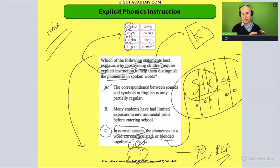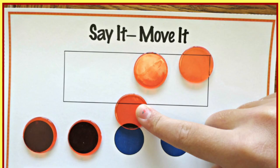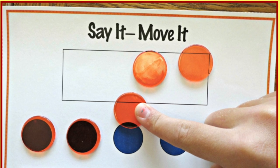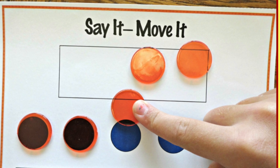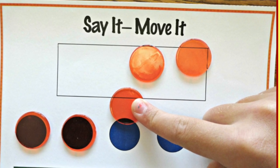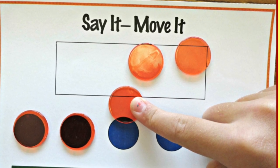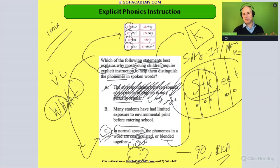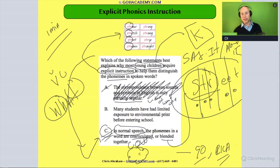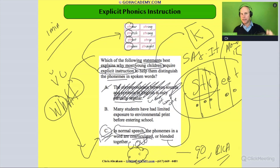There are some sounds in the English language that are co-articulated or blended together, and it might be tricky for a beginning reader. When we do explicit instruction involving sounds — like 'say it and move it' — that type of explicit phonics instruction is going to help with letter-sound correspondence, because in everyday speech sounds and words are co-articulated and blended together.